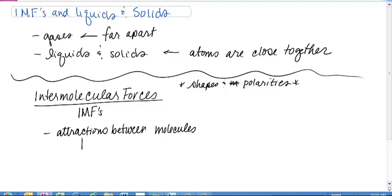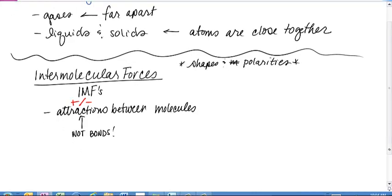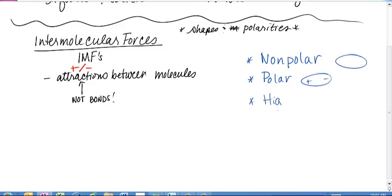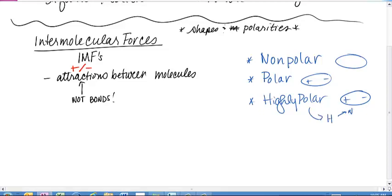These are not bonds — these are literally attractions. It's typically positive-negative attractions. As a quick review: we have nonpolar molecules, which do not have one side that's positive or negative. We have polar molecules, which do have one end that feels a little positive and one end that's negative. And we have highly polar molecules, which have a positive and negative end, and inside have a hydrogen bonded to N, O, or F.